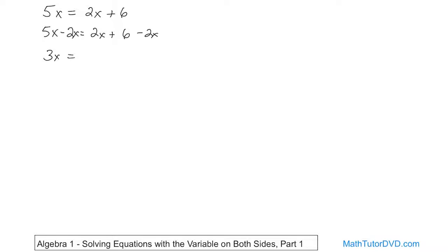On the right-hand side, the 2x's disappear, so you have 6. Now it looks like a familiar problem. 3x means 3 times x, so we'll get rid of the 3 by dividing by 3 on both sides. Since you have a 3 on the top and a 3 on the bottom, they cancel out. On the left side, all you have is x, and on the right side, 6 divided by 3 is 2. So that's the final answer.